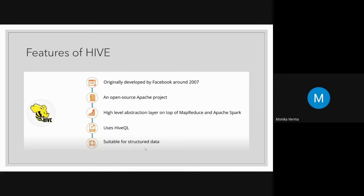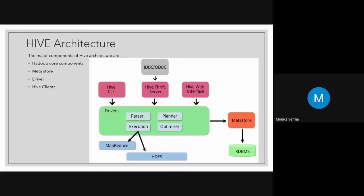You should always remember the features of each component so that when given a scenario and asked which Hadoop ecosystem components to use, you can decide based on the type of data. This is Hive architecture. The major components of Hive are Hadoop core components — HDFS where all files are stored, and MapReduce which runs as the backend job. Queries are parsed, optimized, and then converted into MapReduce jobs to access HDFS files in a distributed manner. There is also a Metastore, which stores the namespace of all tables.